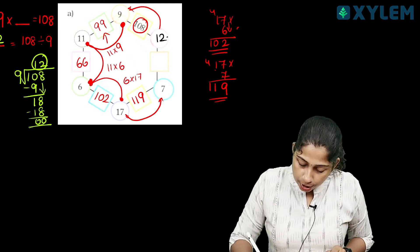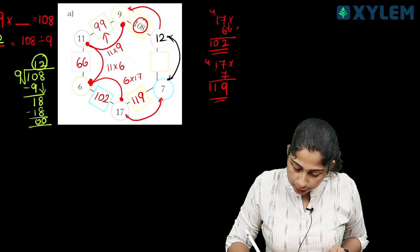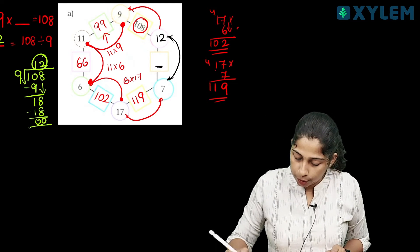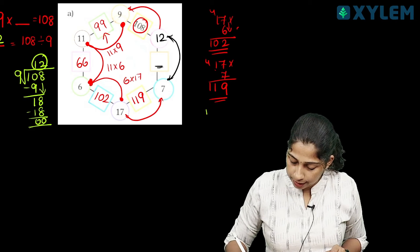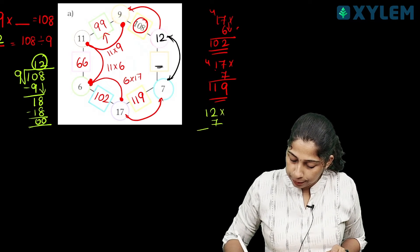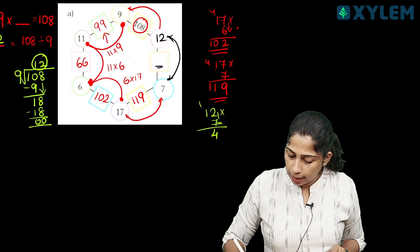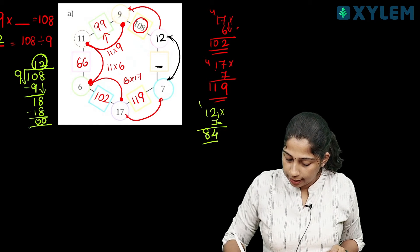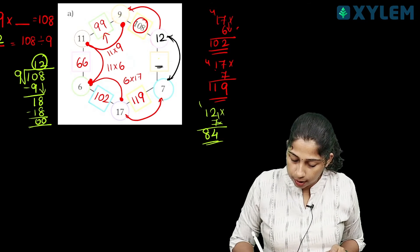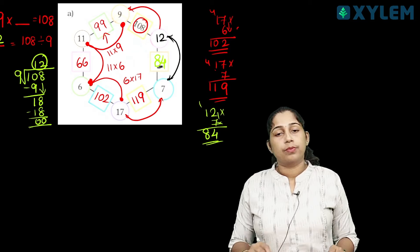This is 12 into 7. 12 into 7: 2 × 7 is 14, balance 1. 10 plus 1 is 84. So here comes 84.